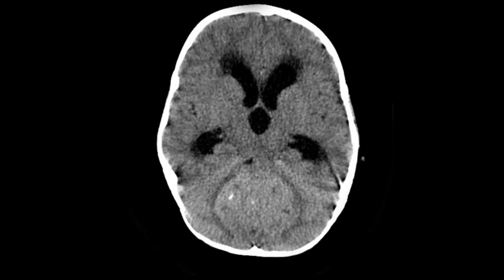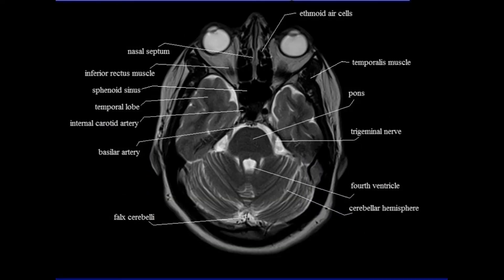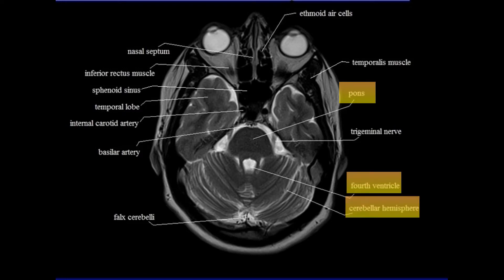Moving on to diagnostics — here we have a CT showing a medulloblastoma, you can see a mass. Before we move on, I want to show you the normal axial structure of the brain: you can see the pons, the fourth ventricle, and then the cerebellar hemispheres.